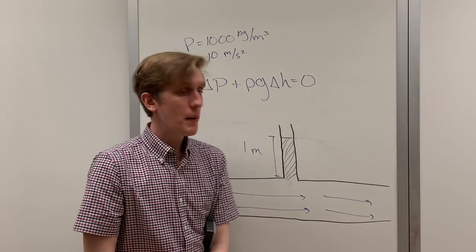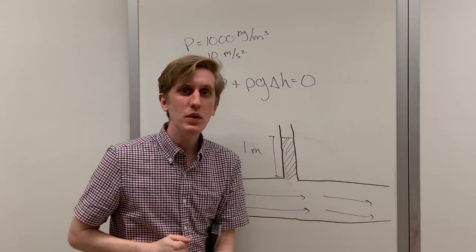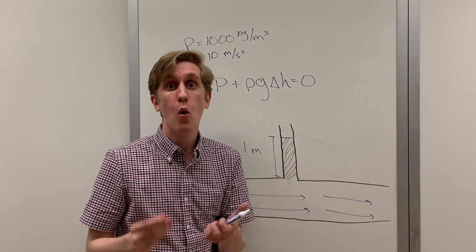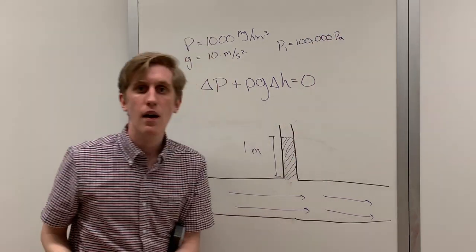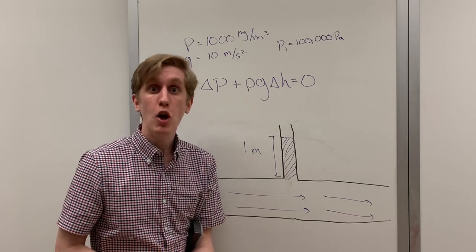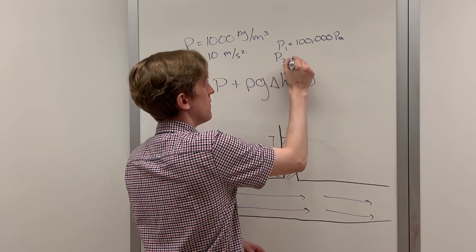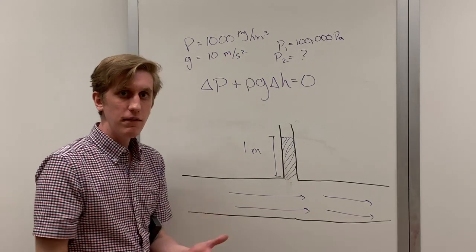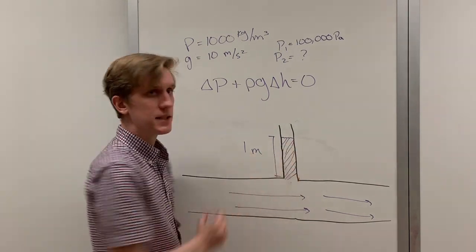Delta P represents the difference in pressure between the top of the stand pipe and the bottom of the stand pipe. Now we know what the pressure is at the top of the stand pipe. It's one atmosphere, or in SI units, 100,000 pascals. We are interested in the pressure at the bottom of the stand pipe. We don't know what it is yet, so we are going to represent it by a variable, P2. So delta P is just the difference in pressure between the top and the bottom, also known as pressure 2 minus pressure 1.